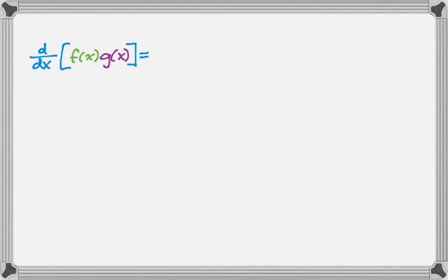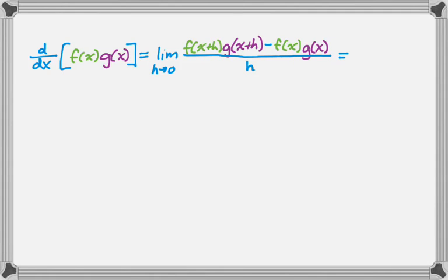So the limit definition of the derivative says that the derivative of a function is the limit as h approaches 0 of the function evaluated at x plus h, which in this case looks like f of x plus h times g of x plus h, minus the original function, and then over h.